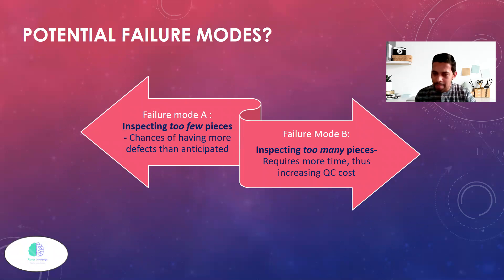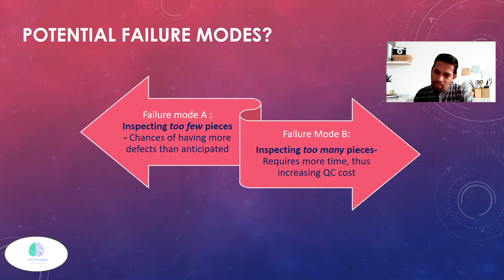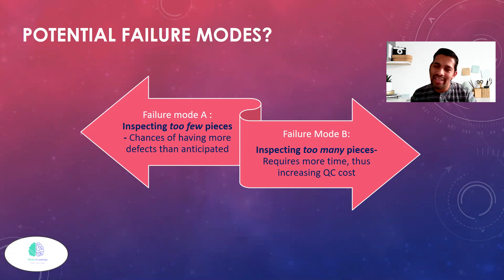Failure mode B is inspecting too many pieces. Let's say you're supposed to do 500 but you're doing 2,000. What will happen is it requires more time — it adds to cycle time, thus increasing QC cost. The cost of quality will increase.